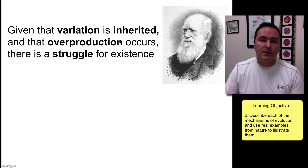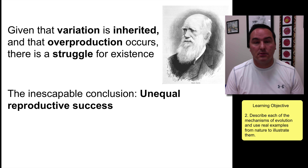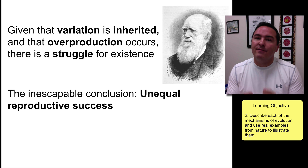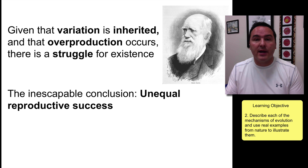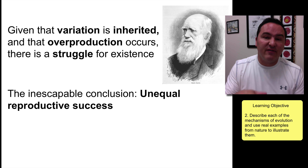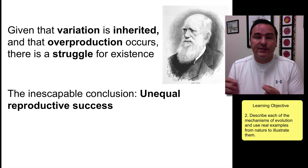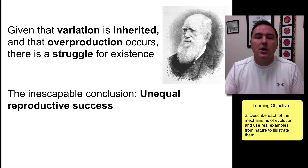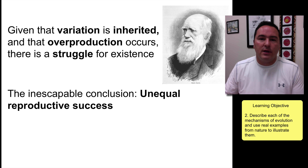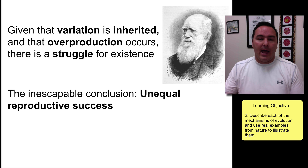So if you put all four observations together — variation, inheritance, the overproduction of offspring, and the struggle — then Charles Darwin said you have unequal reproductive success. Some organisms happen to have the variations that allow them to survive better than other individuals of the same species. They survive until reproduction, then pass those characteristics and variations on to their offspring. Over generations, the offspring become more and more adapted to the environment.